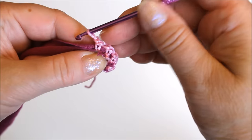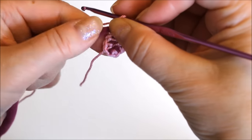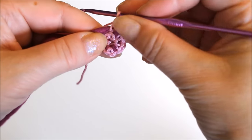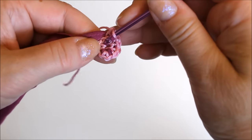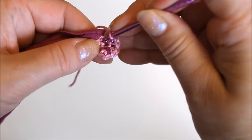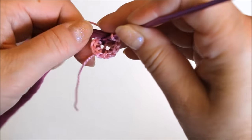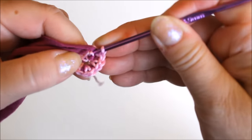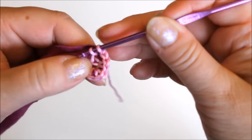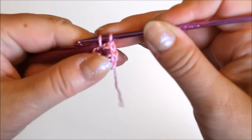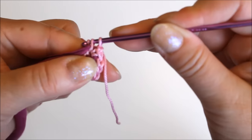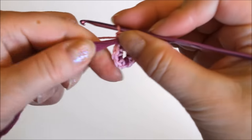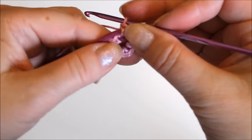I have the chain stitch there and then I will put this t-shirt yarn here on top of it and insert the hook under the chain stitch like that and go and get the yarn and make a single crochet so that the t-shirt yarn stays in between.